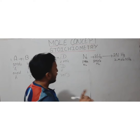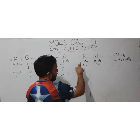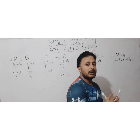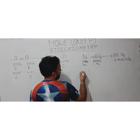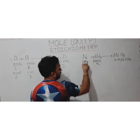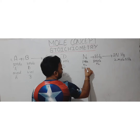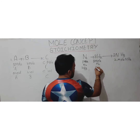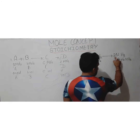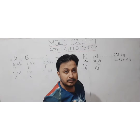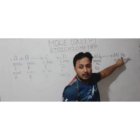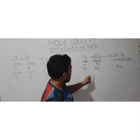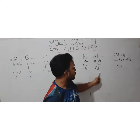Now let's see how this is related in terms of mass. According to the law of conservation of mass, total mass of reactants equals total mass of products. The mass of N₂ is 28 grams (two nitrogen atoms). The mass of 3H₂ is 6 grams (six hydrogen atoms). Ammonia has a mass of 17 grams (14 + 3), and since there are 2 moles of ammonia, that is 2 × 17 = 34 grams.